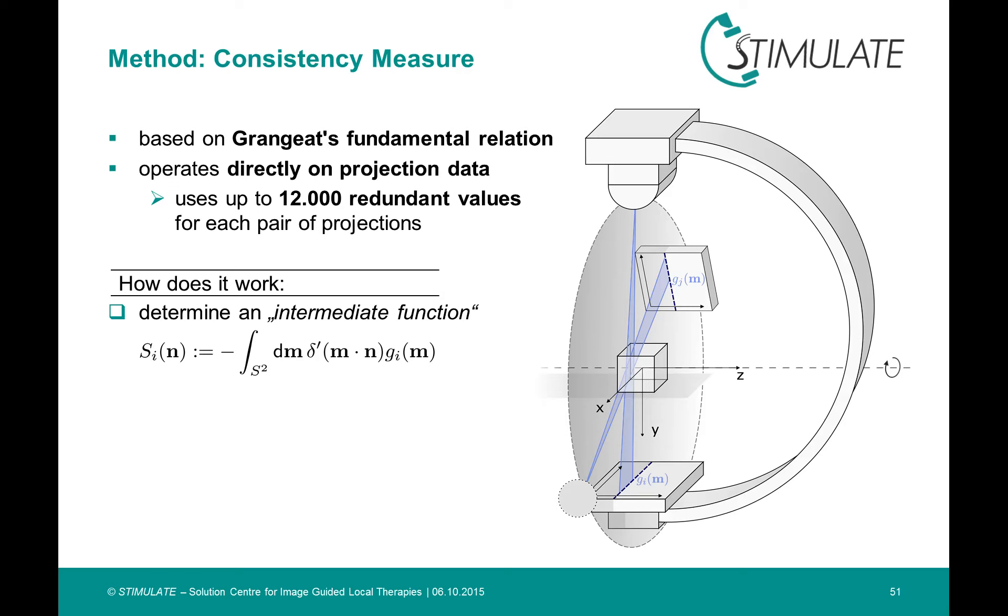Each intermediate function value belongs to such a 2D radon plane with the normal vector n, and it can be calculated from the projection values along the blue dashed lines, which stands for the intersection lines with the flat panel detectors. In order to determine which intermediate function values of two different projections should be equal, we have to find redundant radon planes.